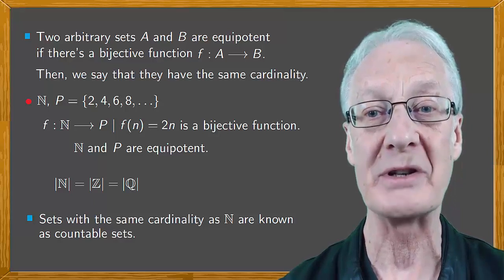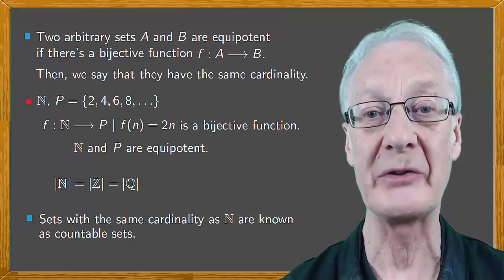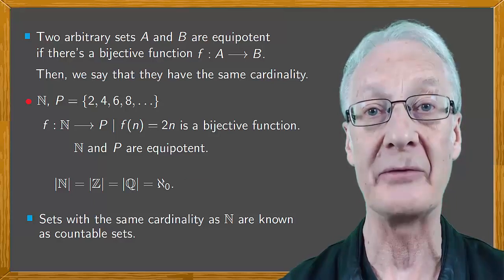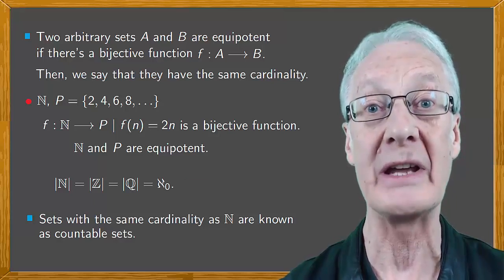Their cardinality, which is the same as that of natural numbers, is denoted by aleph null, also called aleph zero, where aleph is the first letter of the Hebrew alphabet.